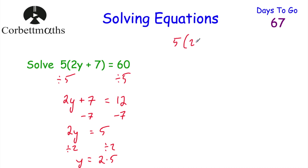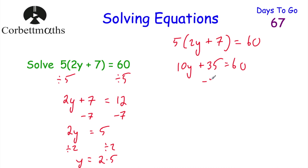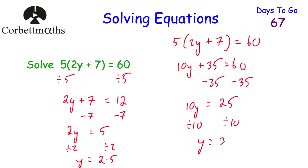Another approach is to expand the brackets first. 5 times 2y is 10y, and 5 times 7 is 35, so 10y plus 35 equals 60. Take away 35 from both sides: 10y equals 25. Divide by 10: y equals 2.5. This approach with expanding brackets is what I would typically use, but dividing both sides by 5 first is probably a bit easier. Either way, if you got that, well done.